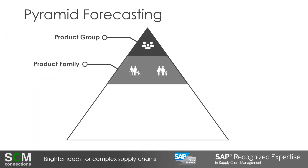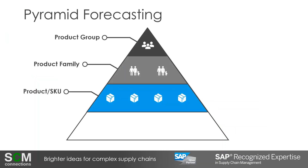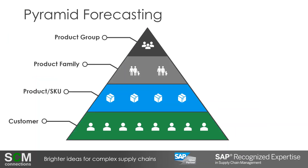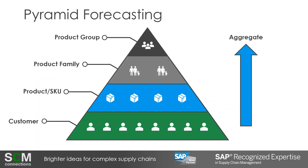Then I'll go down a level to split my product group forecast into product families. Within each product family, I'll split my forecast into products or SKUs. Finally, I'll split my product forecast among my customers so that I'm left with the forecast for product-customer combinations at my lowest level of the pyramid. With pyramid forecasting, I can aggregate up to the product group level and disaggregate down to the customer level, and everything ties together so that all levels are consistent.